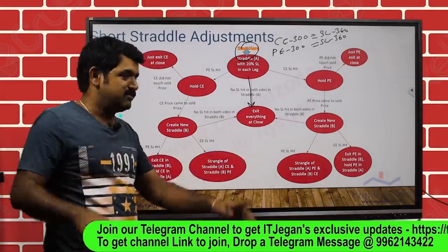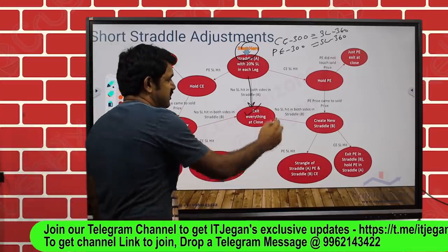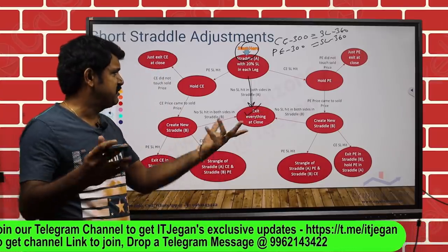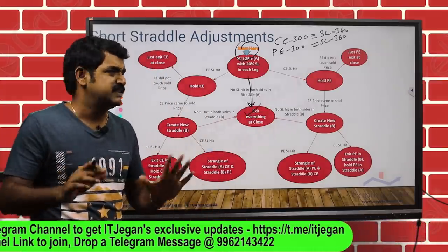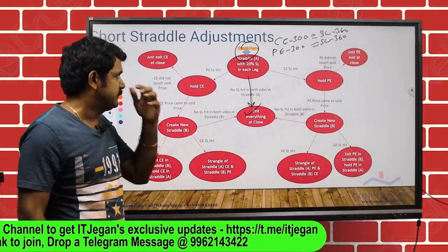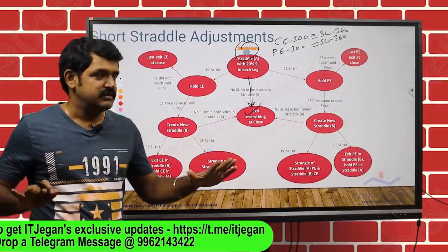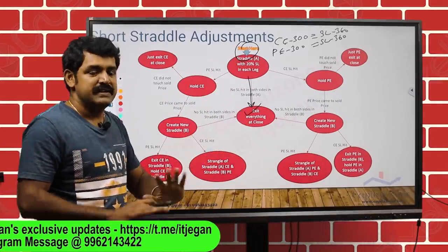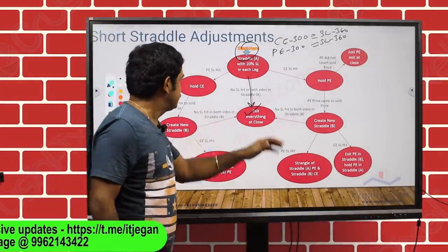If no stop loss is hit, just sit and enjoy. Book the profit — no action required. At 3:15 or 3:20, whatever time you exit, just exit everything. That portion is straightforward.